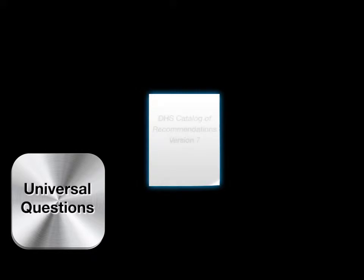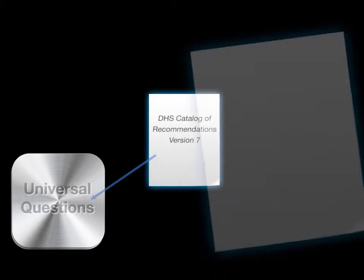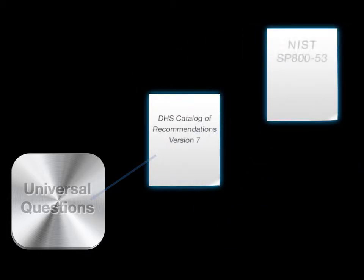The universal questions approach uses a set of simplified questions that come from a robust pedigree of multiple cybersecurity standards. The questions were primarily taken from Version 7 of the DHS Catalog of Control System Security, Recommendations for Standards Developers, or Core Document. The catalog was originally formatted and derived from controls found in the NIST Special Publication 800-53 Federal Standard.